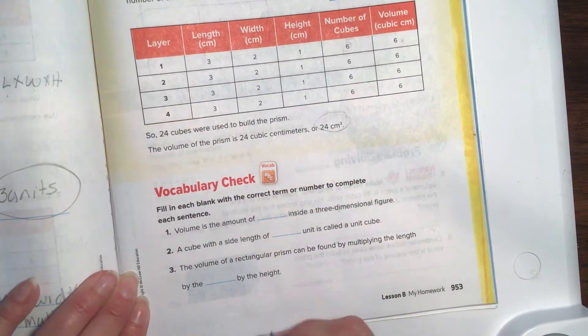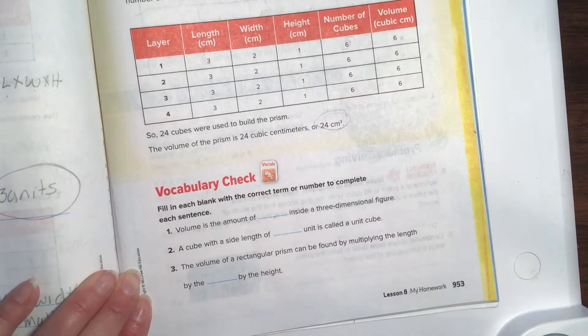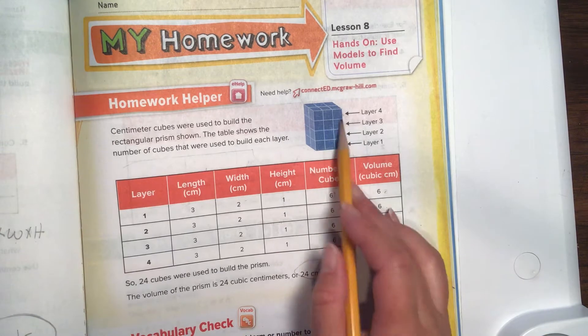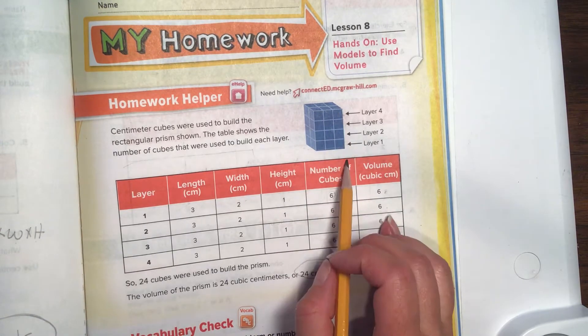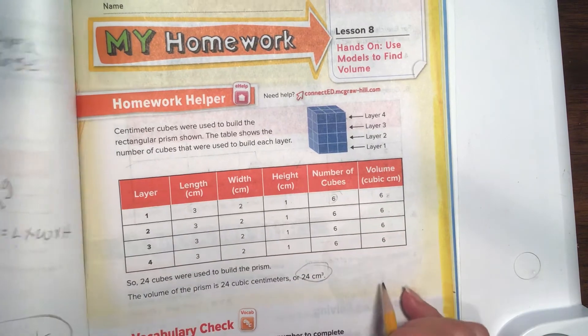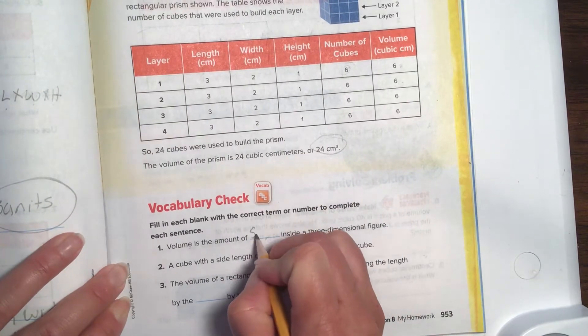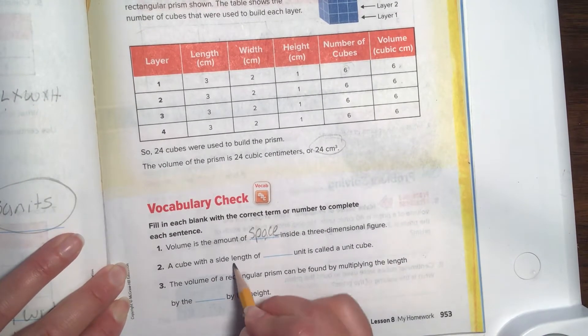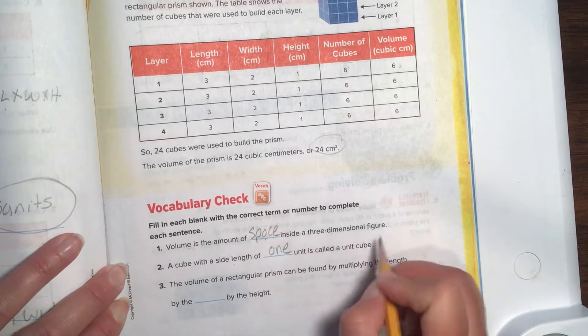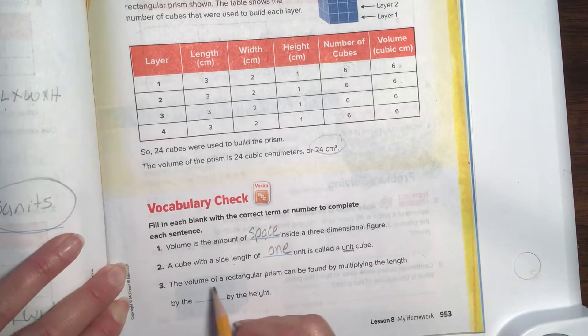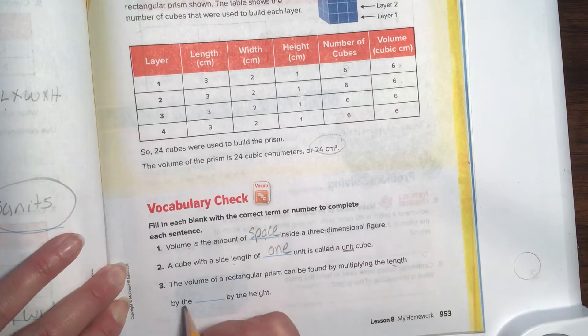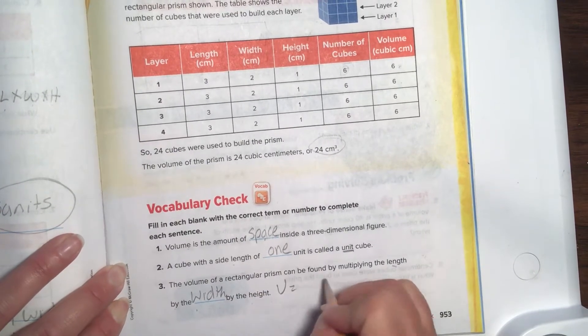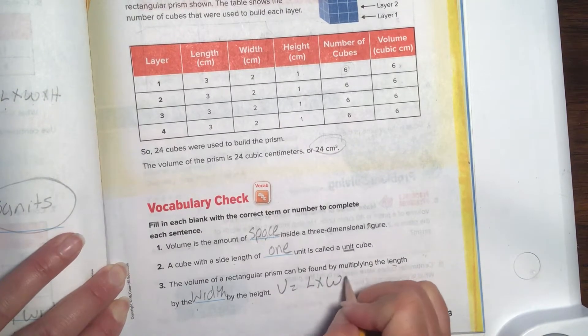All right, let's do a vocabulary check. Volume is the amount of blank inside a three-dimensional figure. Now remember, Math Antics had a really good way of explaining this. It was talking about if you took this whole cube thing here, and this was a box, and you peeled away the box, and inside was a cube of ice. Volume would be like that cube of ice. So volume is the amount of space inside the three-dimensional figure. A cube with a side length of one unit is called a unit cube. The volume of a rectangular prism can be found by multiplying the length times the width times the height.